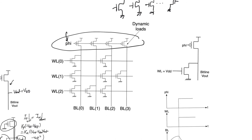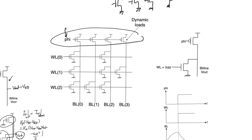Reading proceeds in three steps. First, phi is set to zero: all PMOS transistors turn on and, with all word lines also held at zero, all bit line capacitances pre-charge up to VDD.